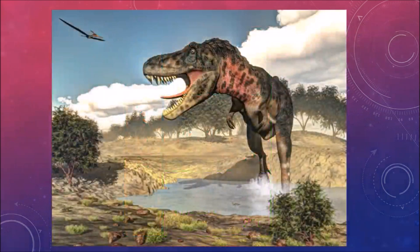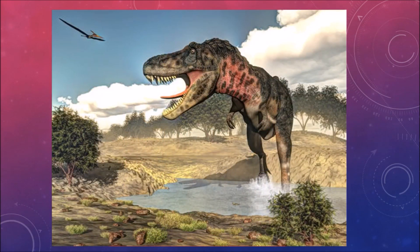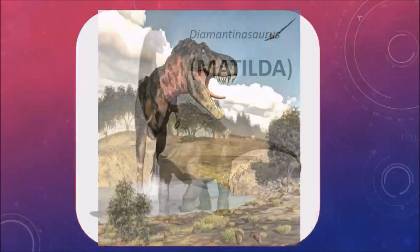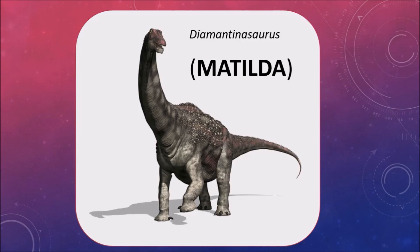The Mesozoic is the era almost everybody has heard of. This is the time when dinosaurs walked the land. Australia had its fair share of beasties, like this Diamantinosaurus, better known as Matilda.